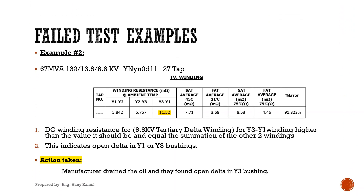Second example: a power transformer with 67 MVA, 132/13.8/6.6 kV, YNyN0D11 with 27 taps. The DC winding resistance for the 6.6 kV tertiary delta winding for the Y3–Y1 winding was higher than expected and equal to the summation of the other two windings. This indicates an open delta in the Y1 or Y3 bushings. The manufacturer drained the oil and found an open delta in the Y3 bushing.